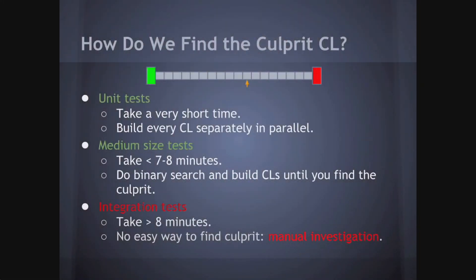There are different types of tests and automation strategies. For unit tests, which take only seconds, if the build fails you can build every single CL separately, possibly in parallel, and find the culprit in seconds or at most minutes. For medium-sized tests, which take a bit longer and are more computation intensive, you do a tradeoff between time and computation — the classic computer science tradeoff — and use a binary search instead.